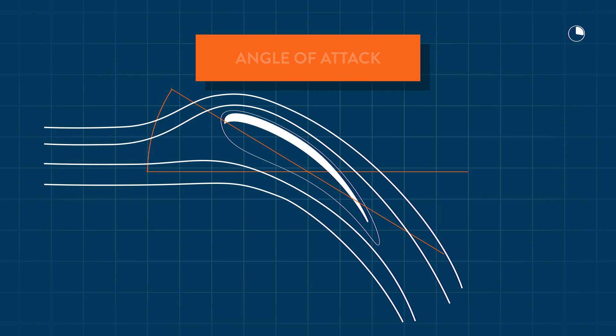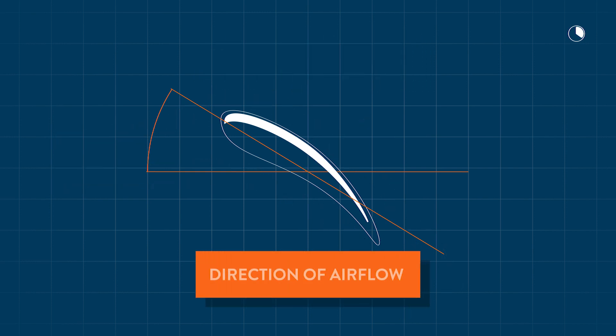By pitching the blade into the wind, the blade generates lift. The direction of the airflow is a combination of the wind and the airflow caused by the rotation of the rotor.